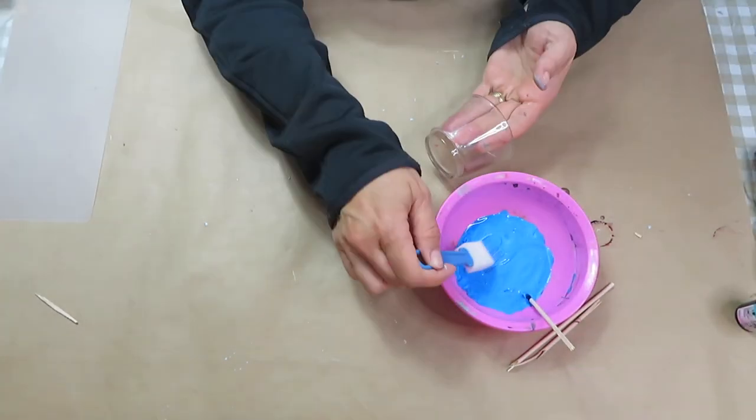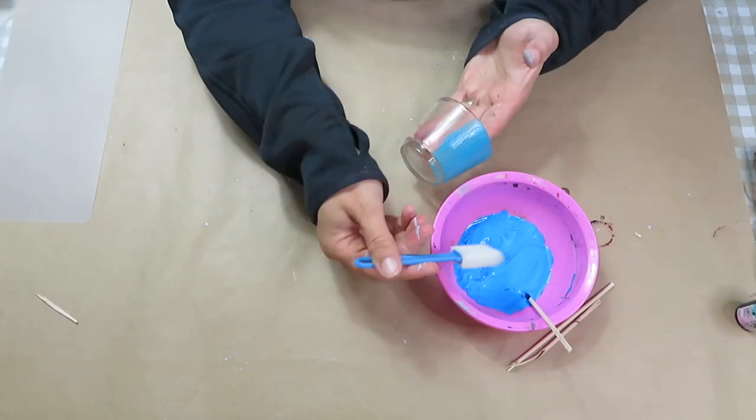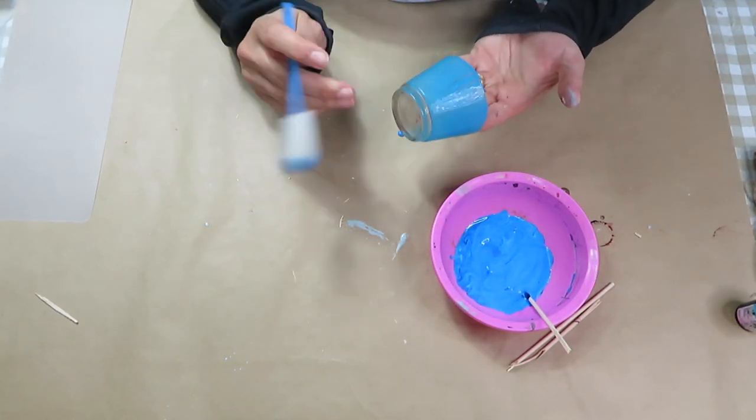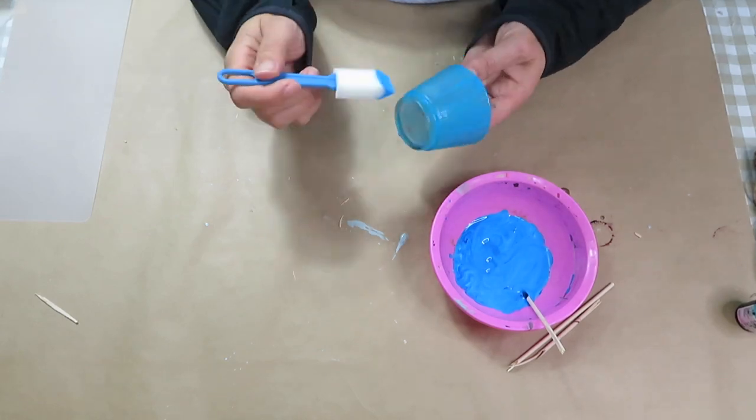Once my paint was ready, I took a sponge brush and painted all of my votive candle holders in two coats.